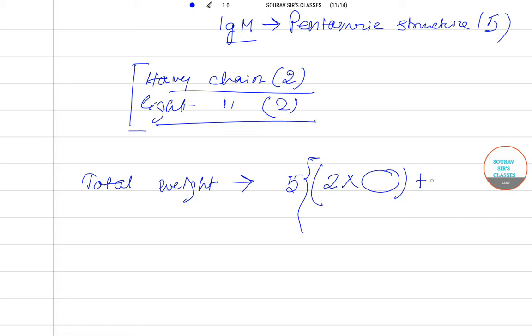2 times the weight of light chain]. For light chains there are two because we have two light chains also, and that is all multiplied by five.